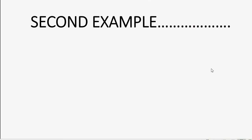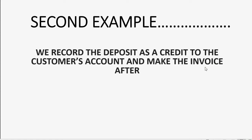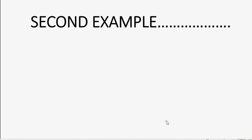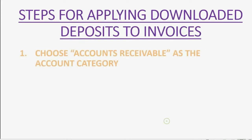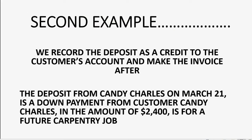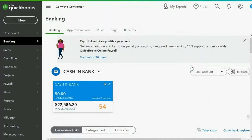In our second example, the transactions are in the opposite order — we record the deposit as a credit to the customer's account and make the invoice after. The deposit from Candy Charles on March 21st is a down payment of $2,400 for a future carpentry job. We first put in the Accounts Receivable account and the customer's name to generate a credit, then make the invoice and go to Receive Payments.